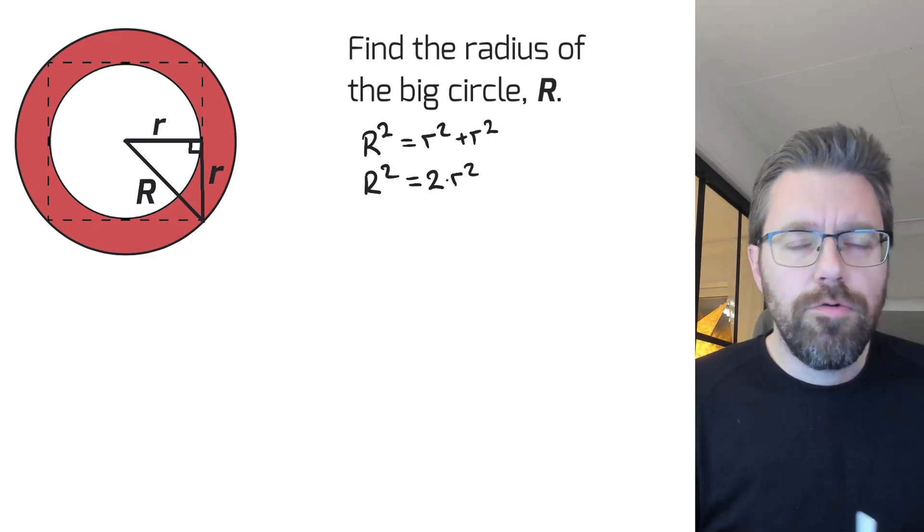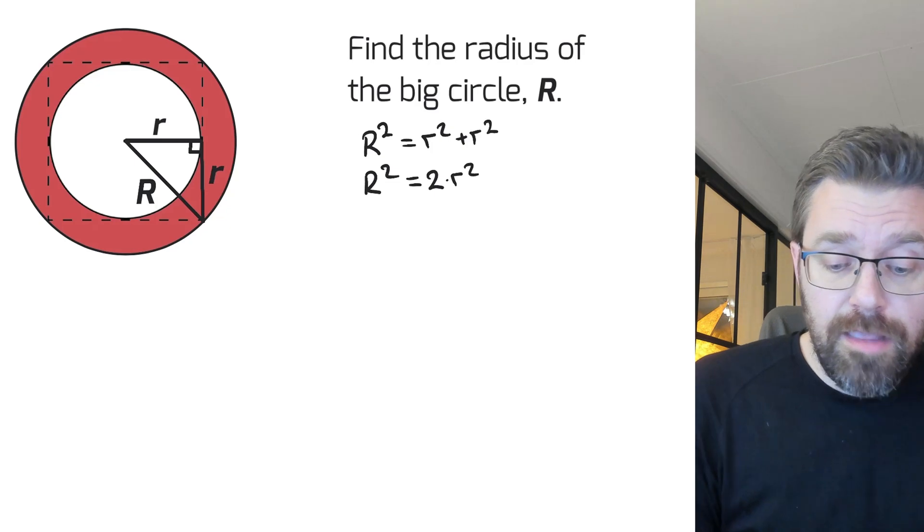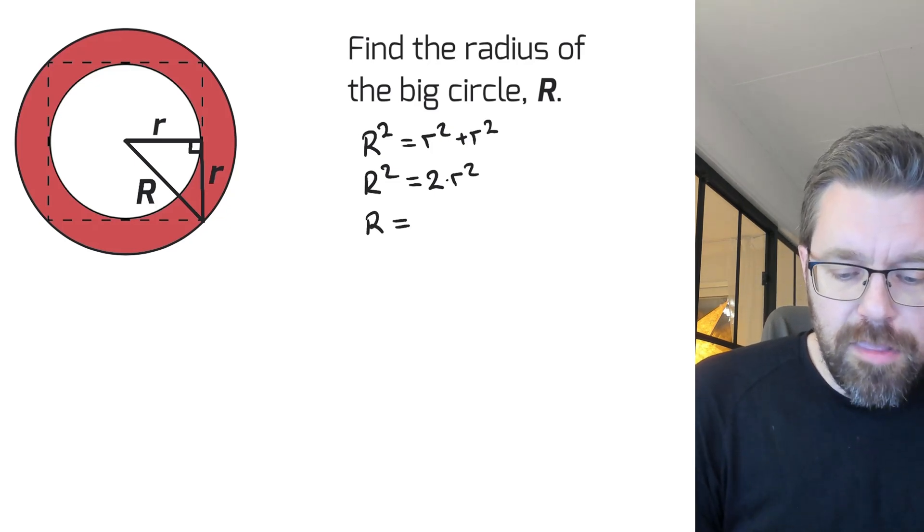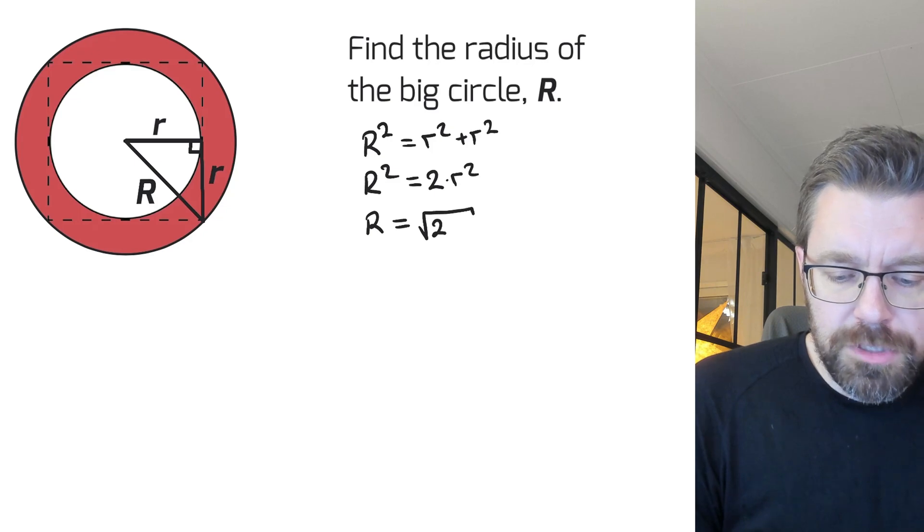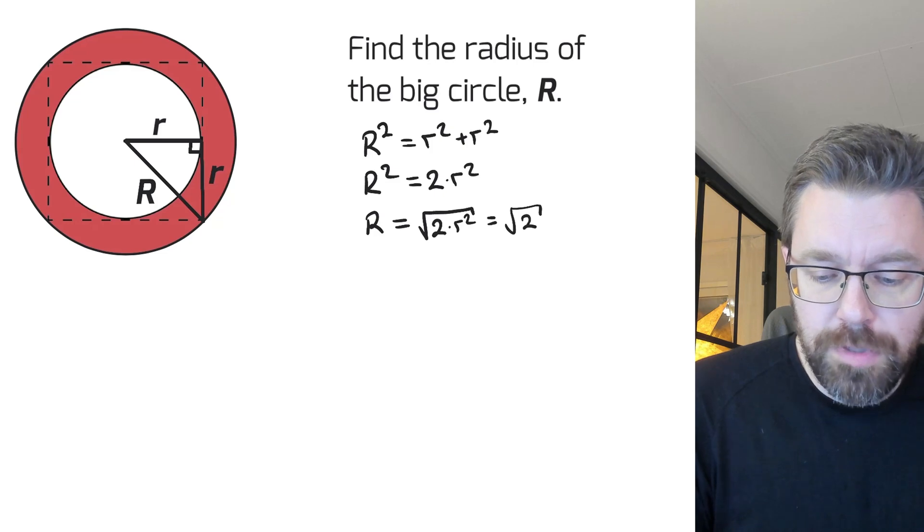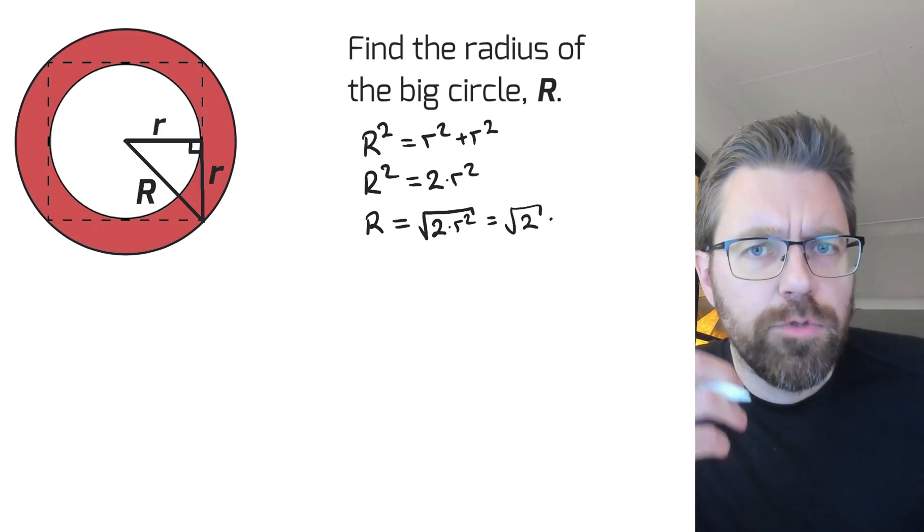And then we can take the square root of both sides in the equation and get that big R equals the square root of two times r squared, and it is equal to the square root of r squared equals r.